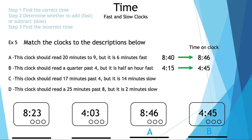Now let's read C. This clock should read 17 minutes past four, but it is 14 minutes slow. 17 minutes past four is 4:17. We subtract 14 to get 4:03, which means the second clock is C.